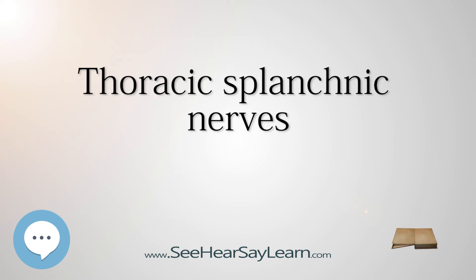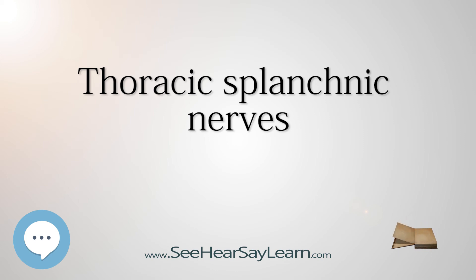The least or lowest splanchnic nerve originates from T12-L2 or T11-T12. The nerve travels into the abdomen, where its fibers synapse in the renal ganglia. The nerves' origins can be remembered by the 4-3-2 rule, accounting for the number of ganglia giving rise to each nerve. However, different sources define the nerves in different ways, so this rule may not always be reliable.